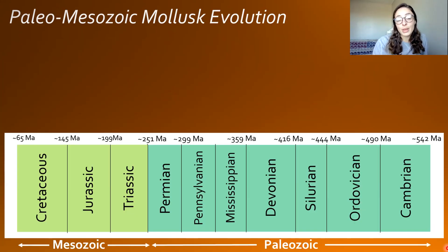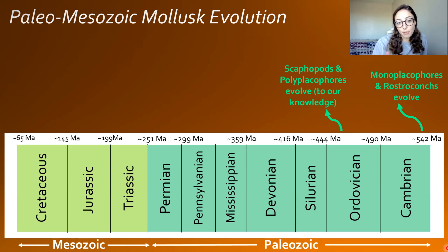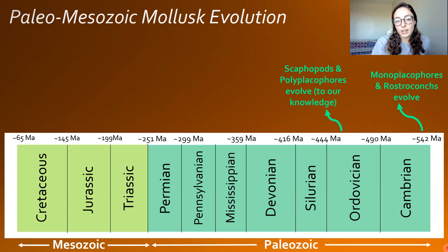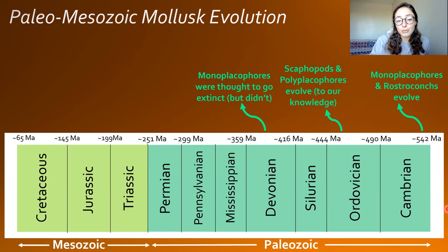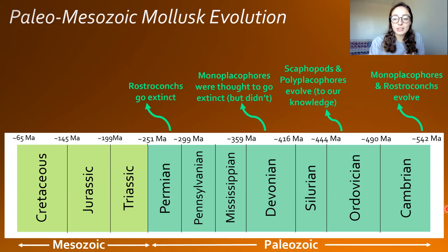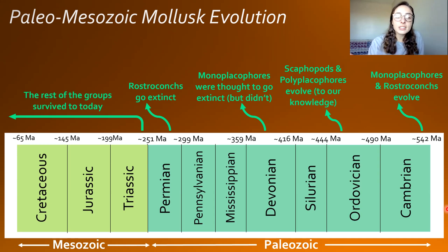Now moving to mollusk evolution on a timeline from the Paleozoic to the Mesozoic, we start with the evolution of monoplacophores and rostraconchs at the beginning of the Cambrian. Then scaphopods and polyplacophores evolved in the Ordovician — though polyplacophores may have evolved earlier given their poor fossil record. In the Devonian, we once thought monoplacophores went extinct, but it turns out they didn't — they're still around today, and we didn't actually know that for a long time. The rostraconchs went extinct at the Permo-Triassic extinction, the only class known to have gone extinct.